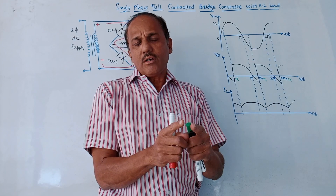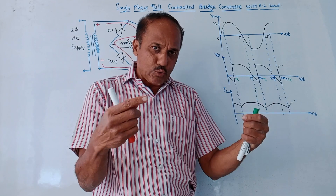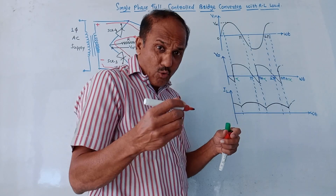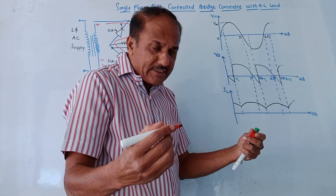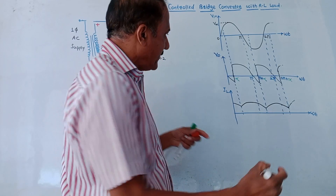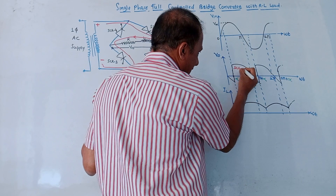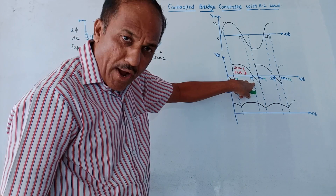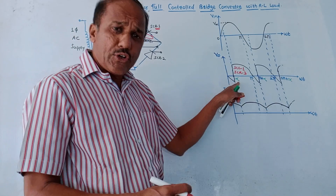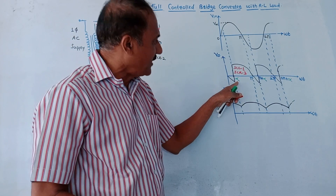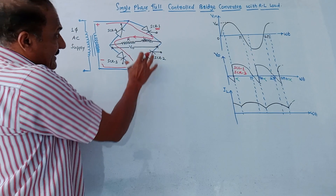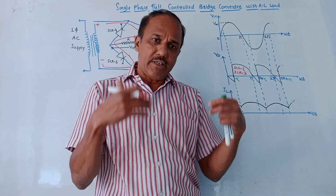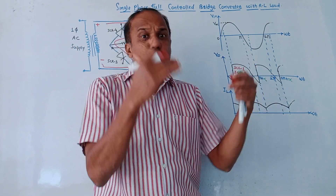Whenever a gate pulse is applied to the gate terminal of an SCR, it gets triggered and starts conducting. During the positive half cycle, SCR1 and SCR3 will start conducting from alpha to π, because we apply the gate pulse at firing angle alpha. This is an inductive load — I have already covered the concepts related to inductive load in previous videos.